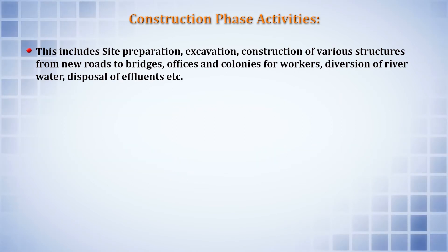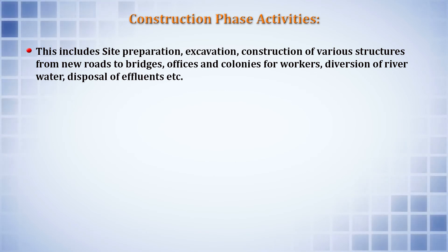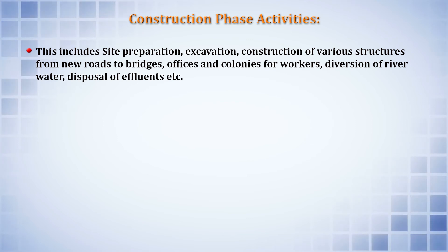The key activities for the construction phase include site preparation, excavation, construction of various structures such as new roads, bridges, offices, and worker colonies, diversion of river water, and disposal of effluents. Construction can take one year or more, and during this time, normal working activities for residents and offices should not be affected, so diversion plans and new roads and bridges must also be constructed and described in the project.